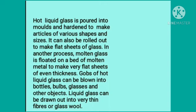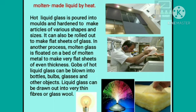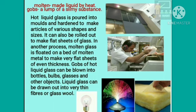Liquid glass can be poured into a mold and hardened to make articles of various shapes and sizes. It can also be rolled out to make flat sheets of glass. In another process, molten glass is floated on a bed of molten metal to make very flat sheets of even thickness. Blobs of hot liquid glass can be blown into bottles, bulbs, glasses and other objects. Liquid glass can also be drawn out into very thin fibers, or glass wool. Molten means made liquid by heat. Blob means a lump of slimy substance.